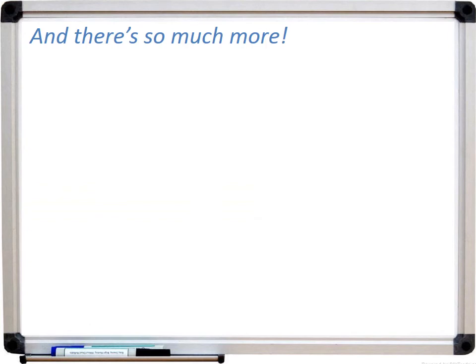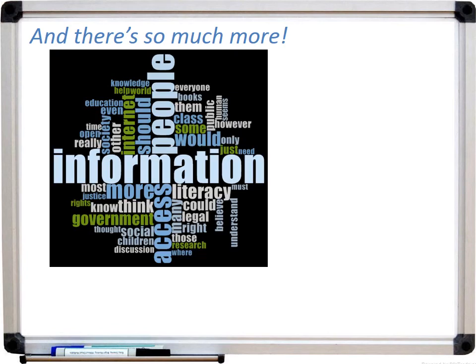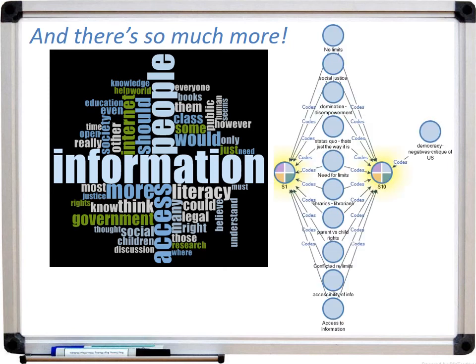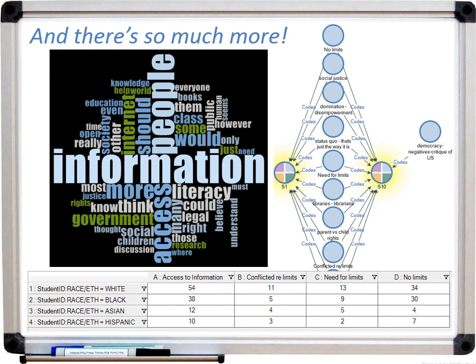There is so much more to these programs beyond what I've covered. In NVivo, for example, you can use word frequency queries to explore your data and generate word cloud visualizations for use in presentations. You can create comparison diagrams to visually explore the convergence and divergence in your data sources or coded themes. You can also define attributes about your research data sources — such as a student's race or ethnicity — and then do comparisons of your coding to examine relationships and patterns by these attributes. These are all things we'll learn about in this workshop.